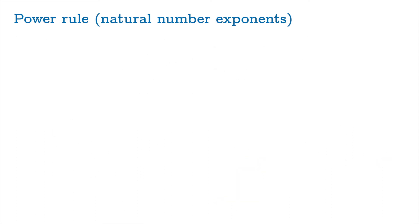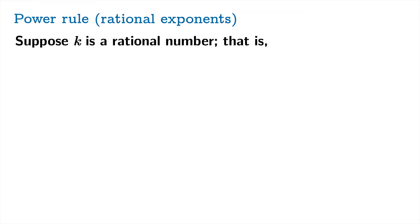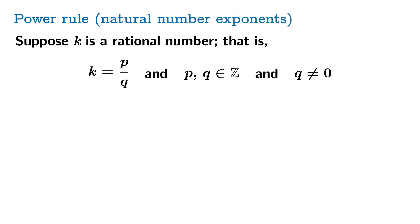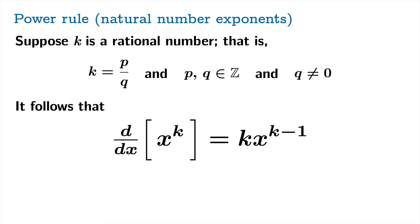Now we want to swap out natural number exponents and put in rational exponents instead. Suppose k is a rational number — we can write it as the quotient of a pair of integers with the denominator being non-zero. We claim that the derivative of x to the k is simply k times x to the k minus 1. So the power rule continues to hold when our exponents are rational numbers, not just natural numbers.